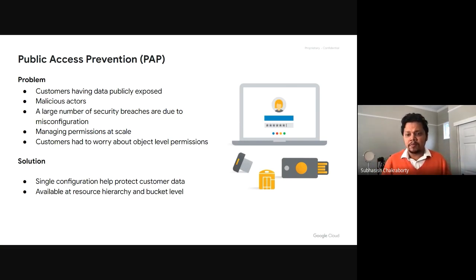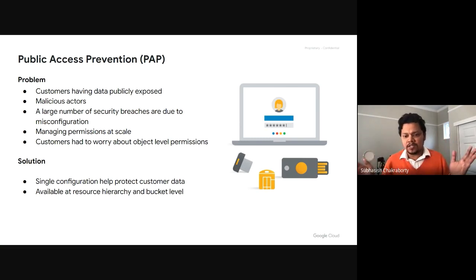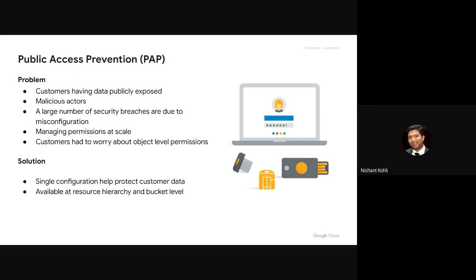To address this, we built a capability called Public Access Prevention. It's a one-click experience — a single setting you can set at a bucket level, or anywhere in the resource hierarchy: organization, folder, or project. You click one button and it ensures that whether you're using IAM policies, ACLs, or IAM conditions, your data will not be publicly accessible — versus other public cloud storage services where you may have to deal with nine different buttons and figure out how to make them work together.